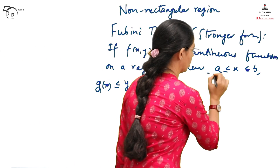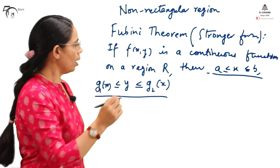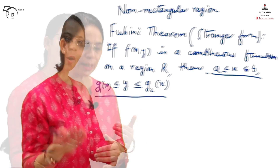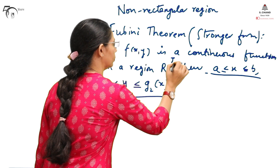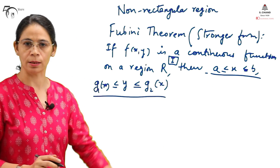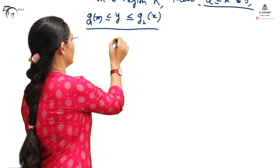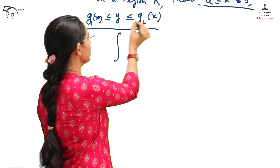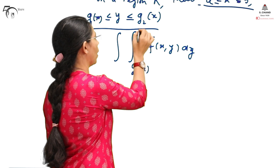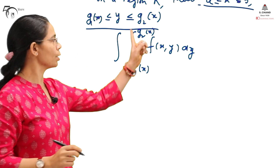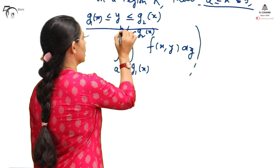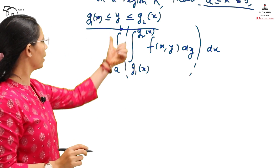In this first type, the limit for x is constant and the limit for y is in the form of another variable. Vice versa is also possible. When x takes constant limits and the limits for y depend on functions of x, we say this is the first type. We integrate f(x, y) with respect to y first, substituting the limits G1(x) as the lower limit and G2(x) as the upper limit. The resultant is then integrated with respect to x, where the limits for x are the constants A to B.